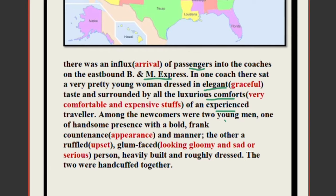Among the newcomers were two young men. One was of handsome presence with a bold, frank countenance — countenance means appearance — very handsome, smart, bold, frank, and with quite posh manners. The other was a ruffled, glum-faced person — meaning he looked gloomy, sad, and serious — heavily built and roughly dressed. A question can come: describe the two men who got inside the train.